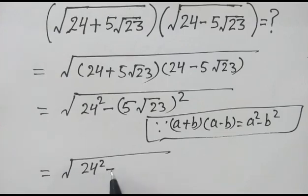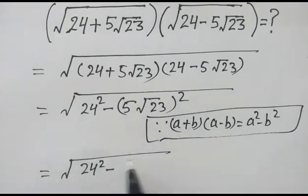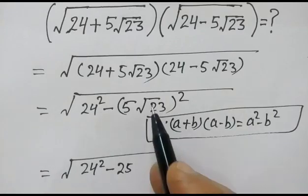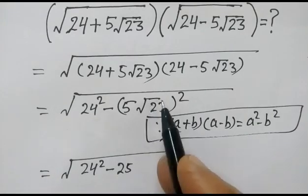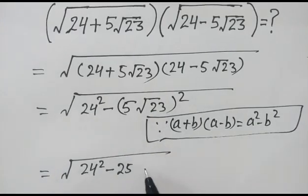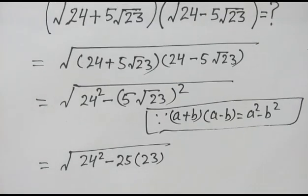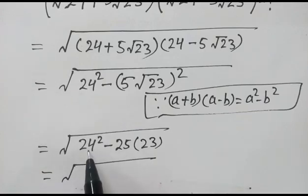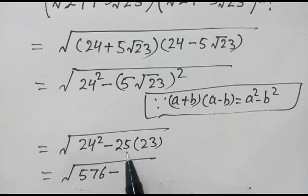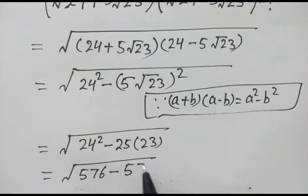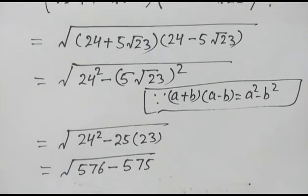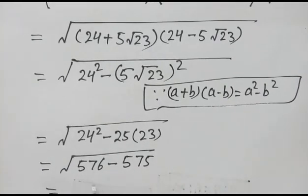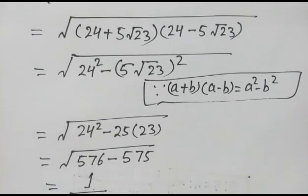Now in the next step, 24 squared minus 5 squared is 25, and square of square root of 23 becomes 23. So the square of 24 is 576, minus 25 times 23 equals 575. This will be equal to 1. Friends, thank you.